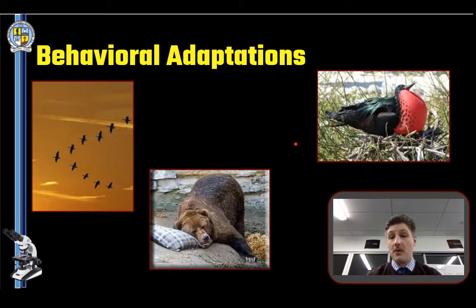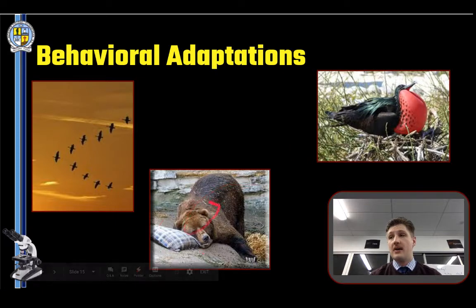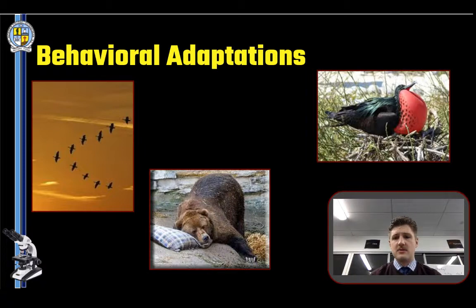Moving on to behavioral adaptations — the definition is the ways an organism acts to help it survive in its environment or to get a mate. Here we have three examples: the classic hibernating bear; geese flying south for the winter to better climates; and birds of paradise, which are a fantastic example of the dances and displays animals use to attract mates.